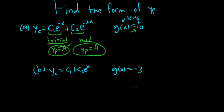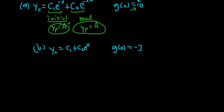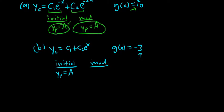The first thing you do is look at the right-hand side of the DE to make our initial guess. It's going to be the same as before — because it's a constant, Yp equals a constant A. Now for the modified, we look at the terms of Yc. We have A here, and look — here we have C1. There is repetition. So we have to multiply this by x to eliminate the repetition. So Yp is equal to Ax. There's no repetition there, so that's the modified guess.